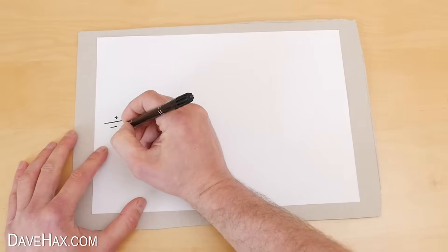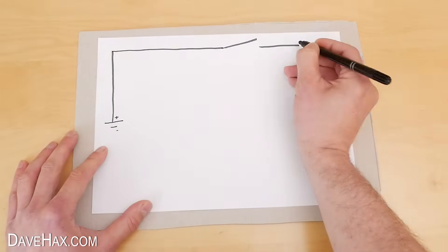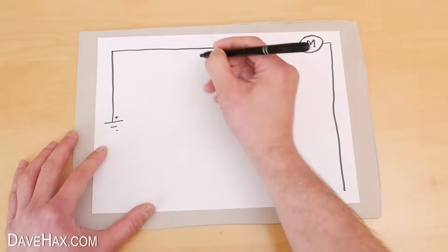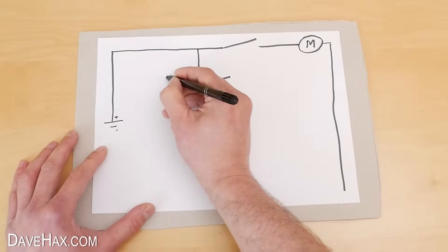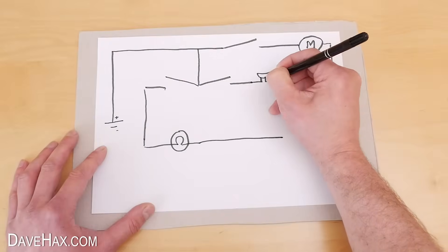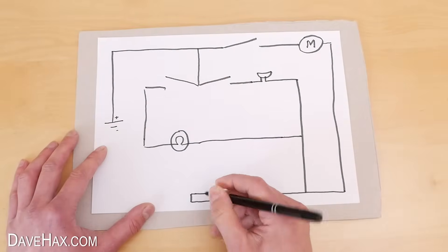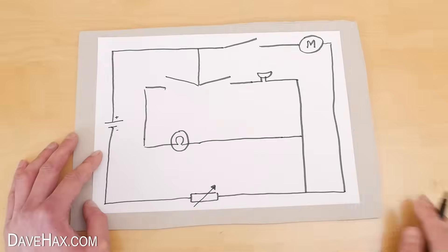The battery will be placed here on the left hand side, then there'll be a switch along the top with a motor, then here we're going to have another two switches, one which operates a light bulb and one which operates a buzzer. Then along the bottom here we're going to add a variable resistor before completing the circuit.